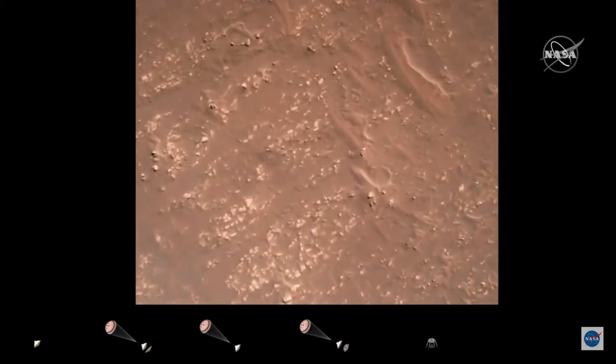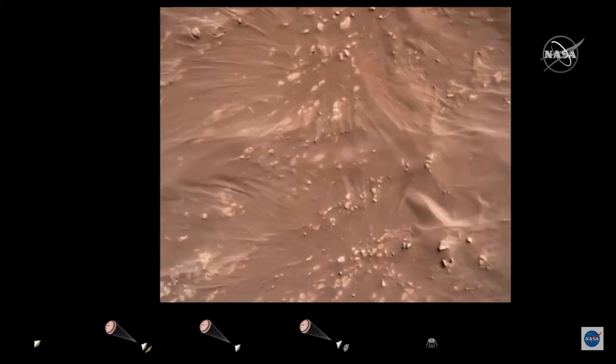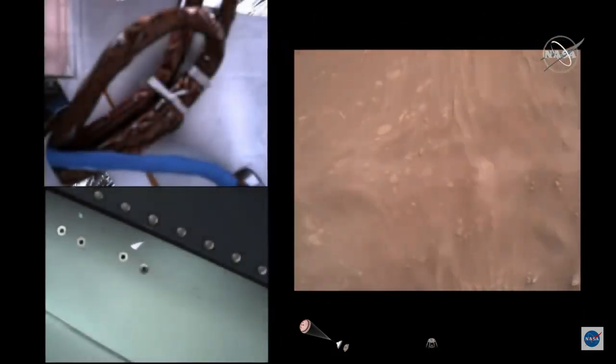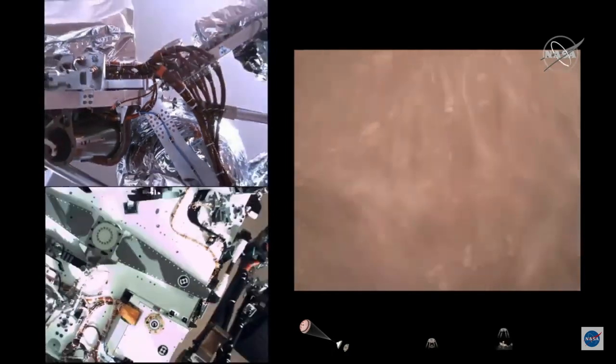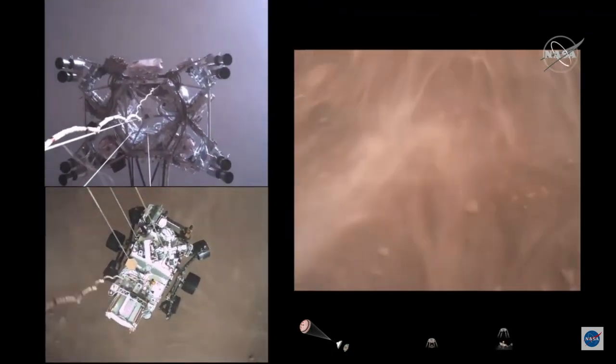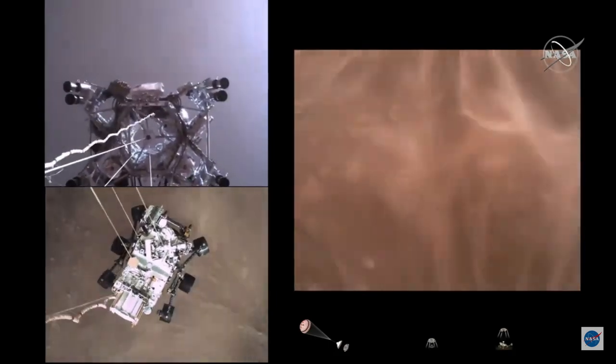We have started our constant velocity descent, which means we are conducting the sky crane, about to conduct the sky crane maneuver. The sky crane maneuver has started. About 20 meters off the surface.